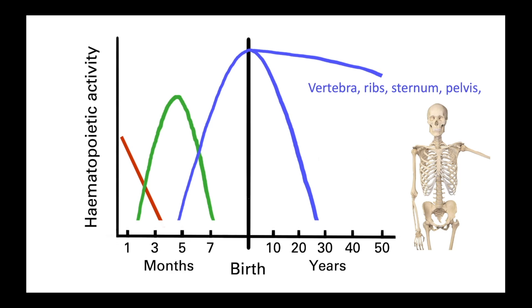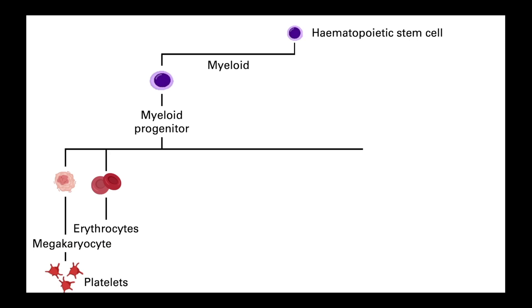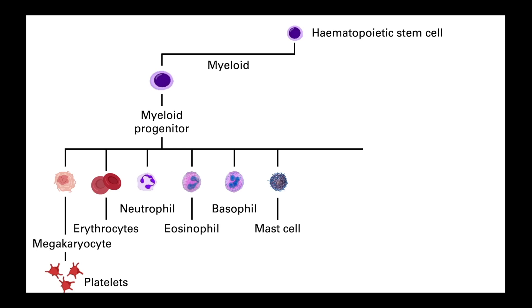While we now have the capacity to determine what surface markers are expressed on cells, historically these cells were characterised by their appearance under a microscope. The myeloid lineage largely gives rise to cells of the innate immune system, but also to platelets and red blood cells or erythrocytes. Three main classes of immune cells develop in the myeloid lineage. The first are the granulocytes or polymorphonuclear cells, which comprise cells with a unique multi-lobed nucleus and numerous cytoplasmic granules containing antimicrobial peptides. Cells in this group include neutrophils, eosinophils and basophils, which are mainly present in the circulation, and mast cells which reside in tissue.